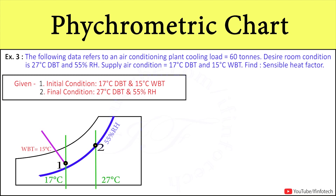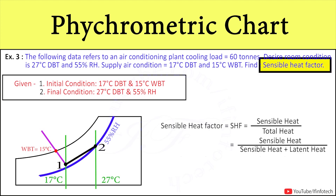As you can see, dry bulb temperature has been increased from 17°C to 27°C from initial to final condition. So we have the process 1 to 2, and in the problem we want to find out the sensible heat factor. Sensible heat factor is the ratio of sensible heat to total heat, and total heat is the sum of sensible heat and latent heat.